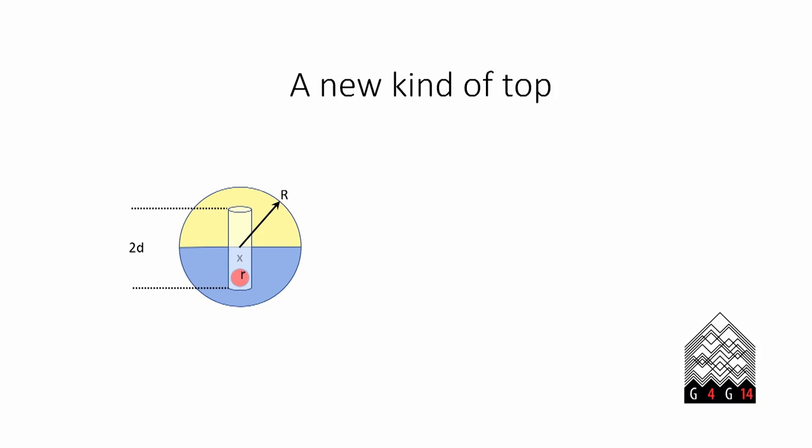So I thought about this paper and started printing some tops, and I had this idea to create a top with a hollow cylinder inside where a metal ball can move up and down. It only has three free parameters: the length of the cylinder and the radius of the two balls.